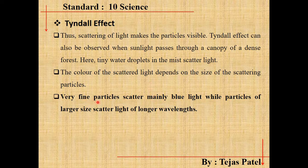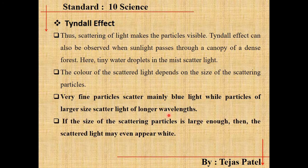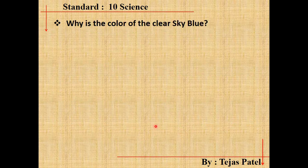In the Tyndall effect, which color comes out depends on the particle's size. Very fine particles scatter mainly blue light, while particles of larger size scatter light of longer wavelength — and longer wavelengths correspond to red or white color. So if the particle size is small, the light will appear blue; if medium-sized, the light will appear reddish; and if the particles are large enough, the scattered light may even appear white.